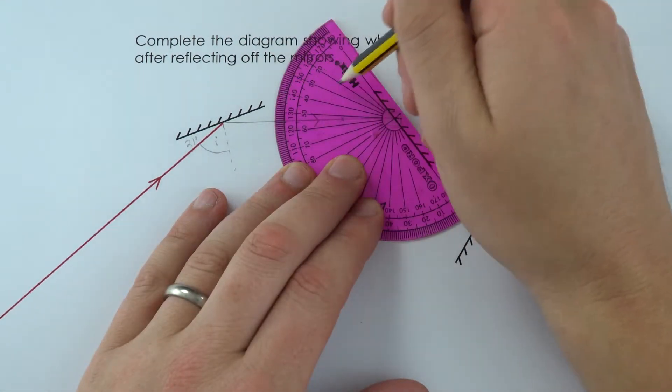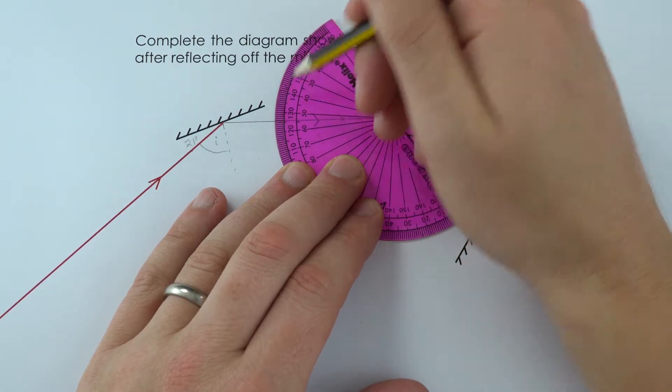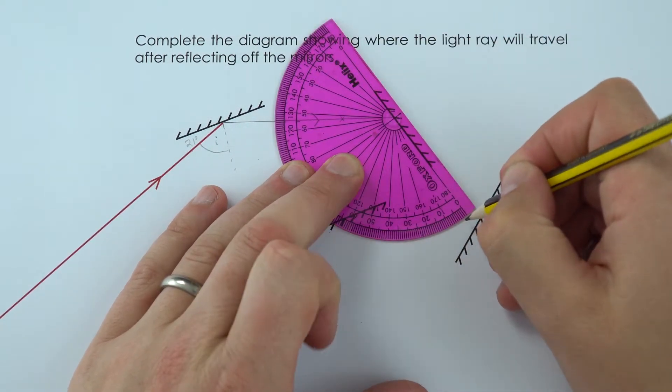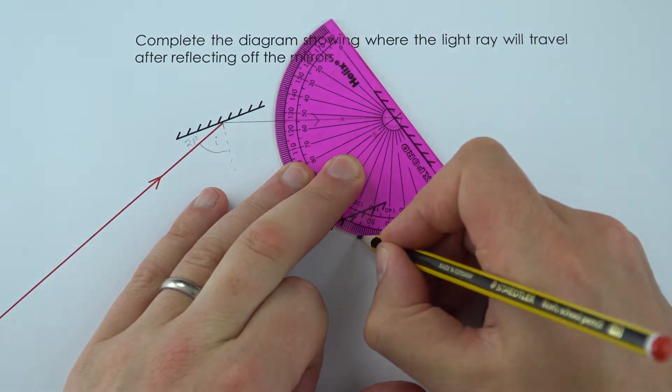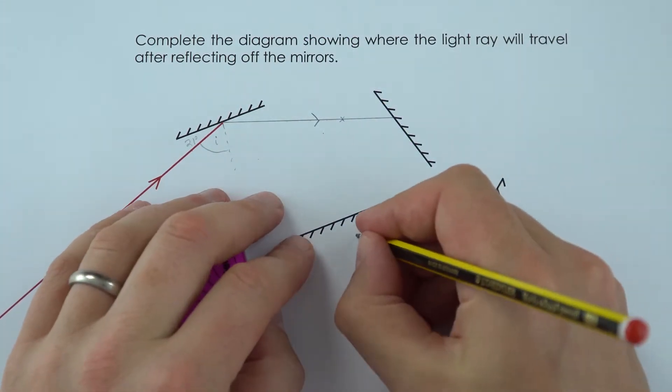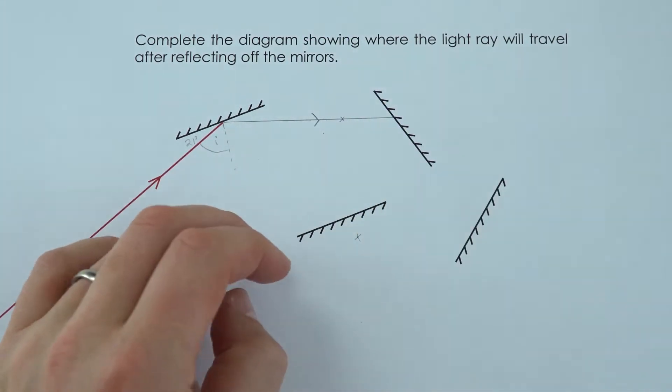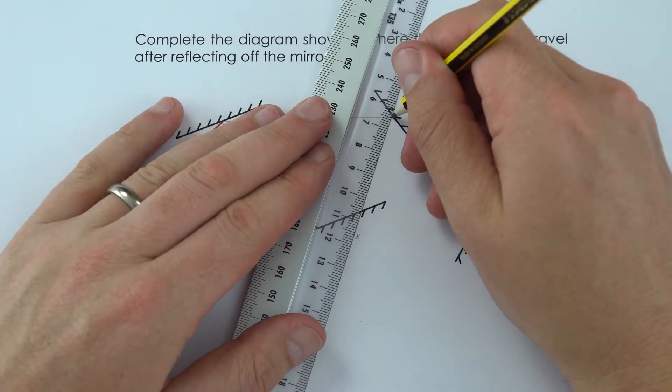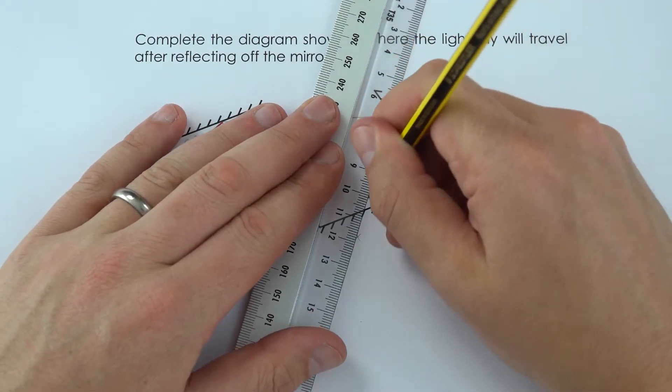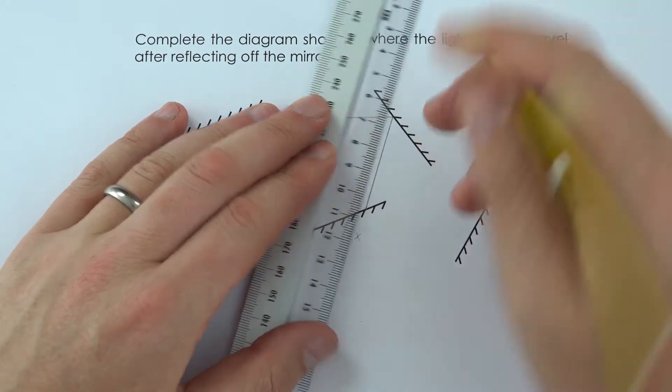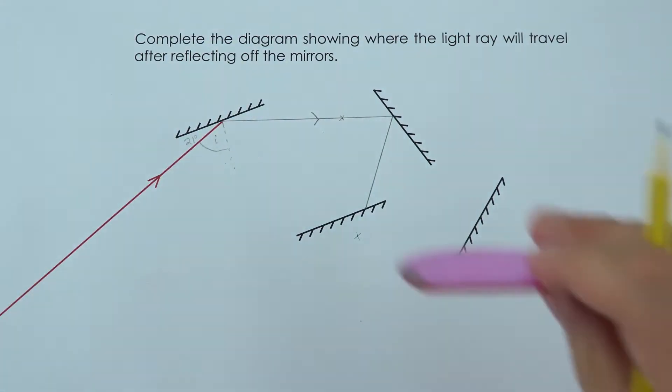So to me that looks like 54 degrees going from there to there. So on this side I'm going from zero up to 54 just marking it on again in the same way. Maybe a little cross just to make that a bit clearer. Using my ruler once again join up the line but here it doesn't quite go all the way because it hits the mirror and I'm just going to keep doing that.